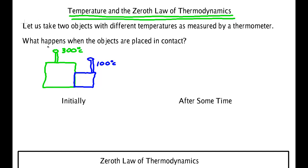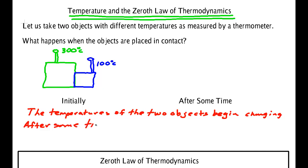And you probably know what's going to happen. The temperatures of both objects begin to change. After some time, the change stops. And we say the objects are in thermal equilibrium.